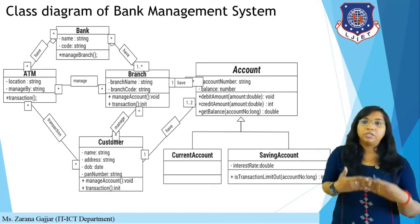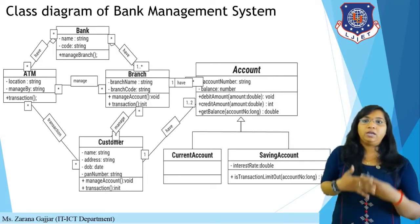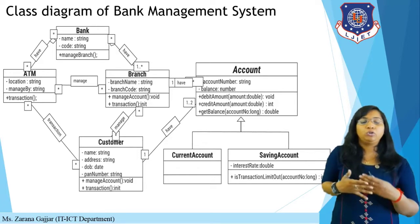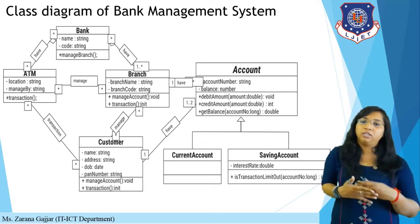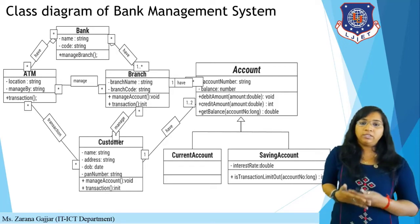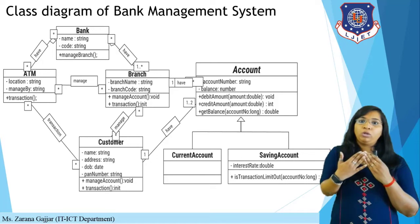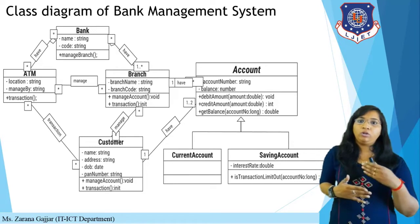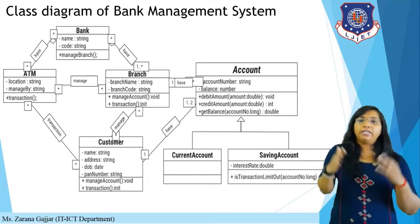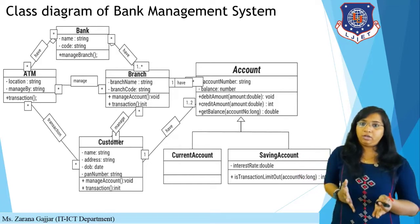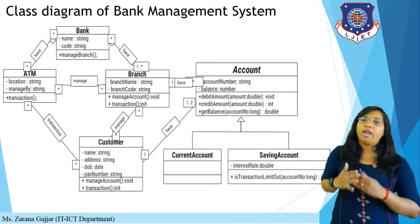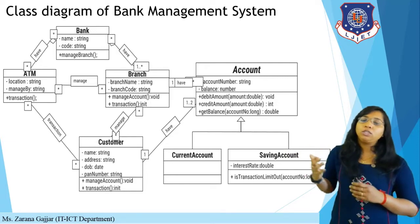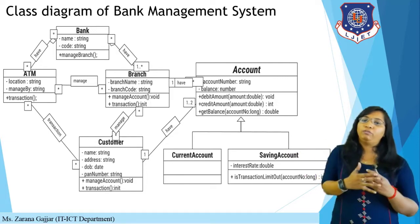The customer class has attributes like name, address, phone number, date of birth, and bank card, and operations including manage account and perform transaction. The account class has account number and account information, with operations like debit account, credit account, and transaction details. The account class is generalized into current account and saving account. Multiplicity, aggregation, and generalization relationships are all shown between the various classes.